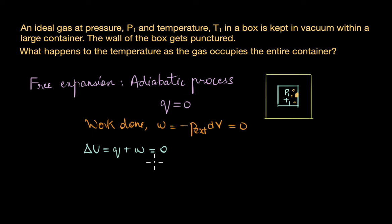Delta U can also be written as n Cv delta T. Since n and Cv are constants and cannot be zero, if delta U equals zero then delta T also has to be zero. That means the temperature of the system remains constant. In other words, the final temperature is same as the initial temperature.